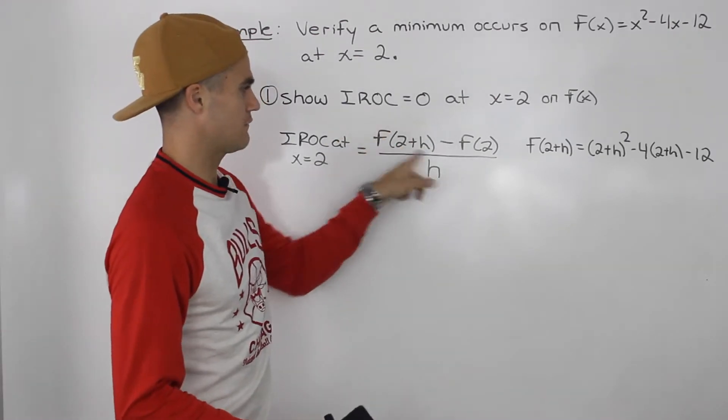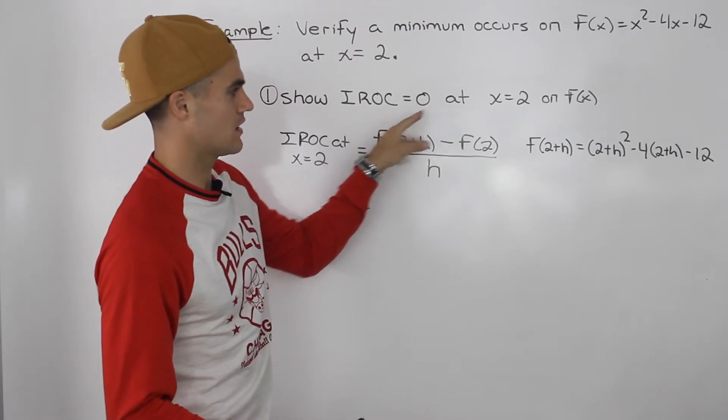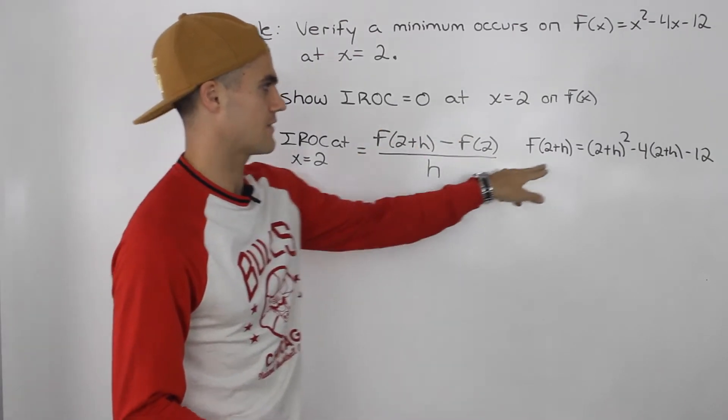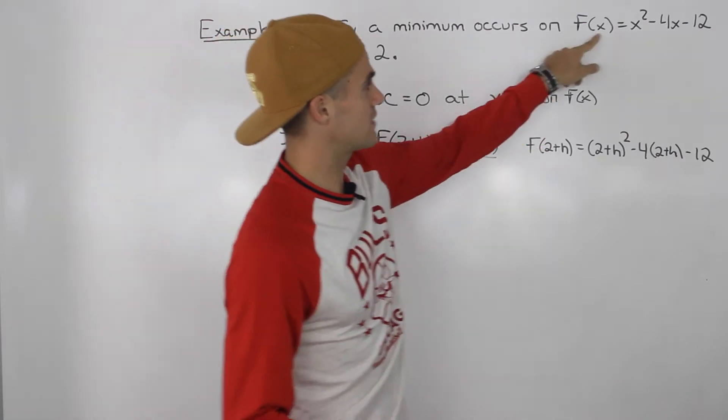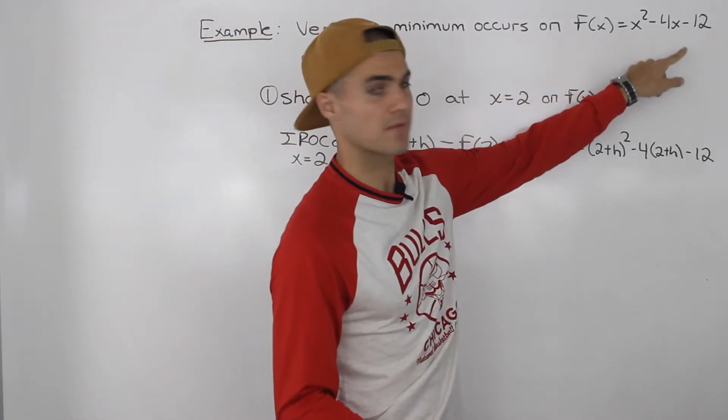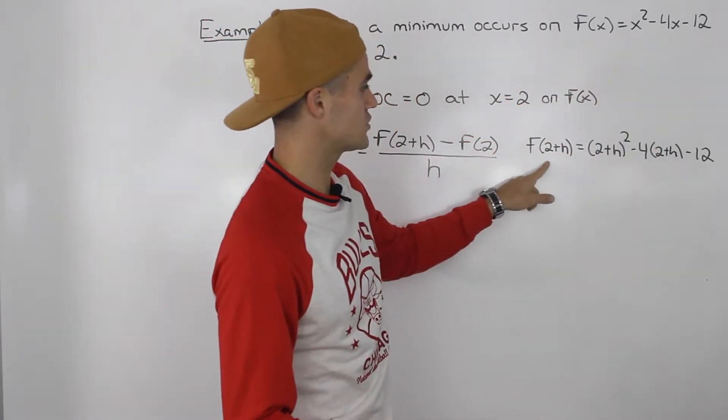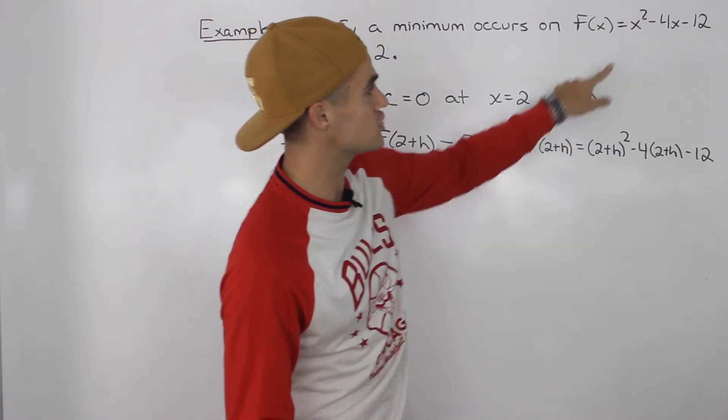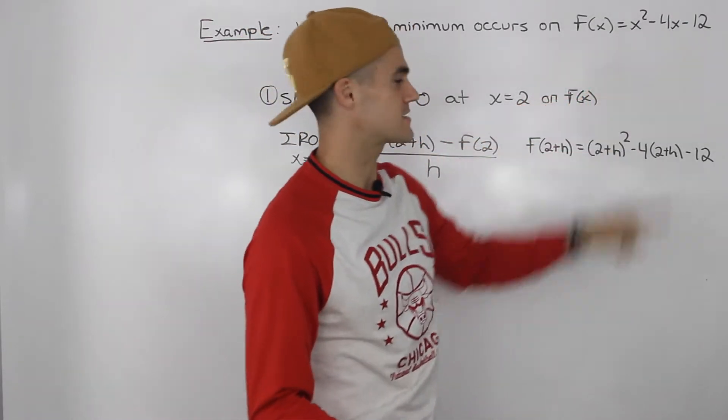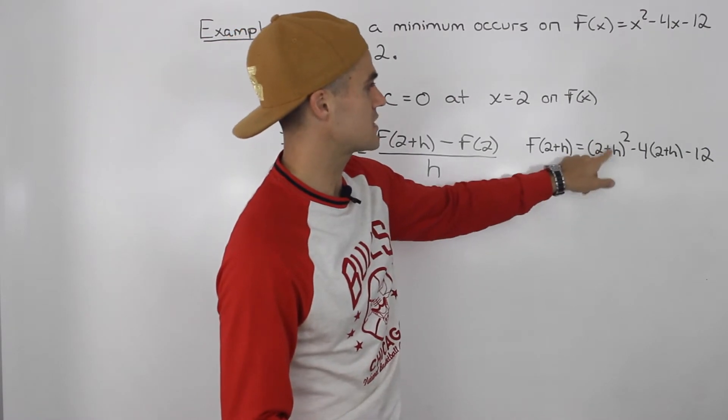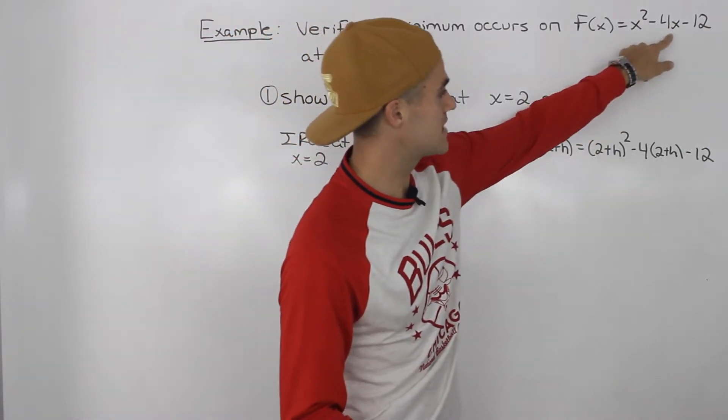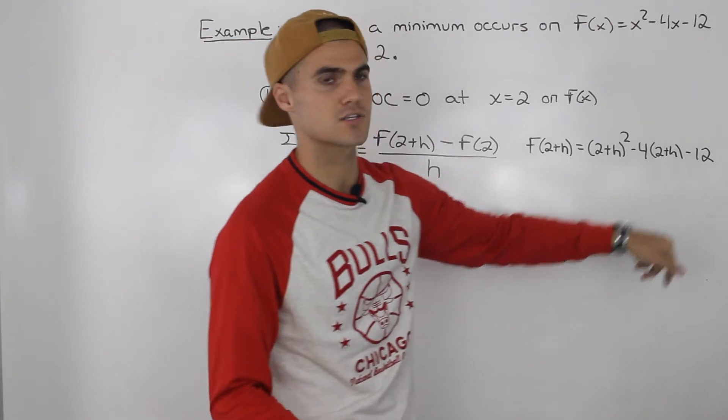I'm going to take the f(2+h) portion of this expression and work on it on the side. Since f(x) = x² - 4x - 12, then f(2+h) means we plug in 2+h for all the x's in the function, which I did here. So (2+h)² - 4(2+h) - 12.